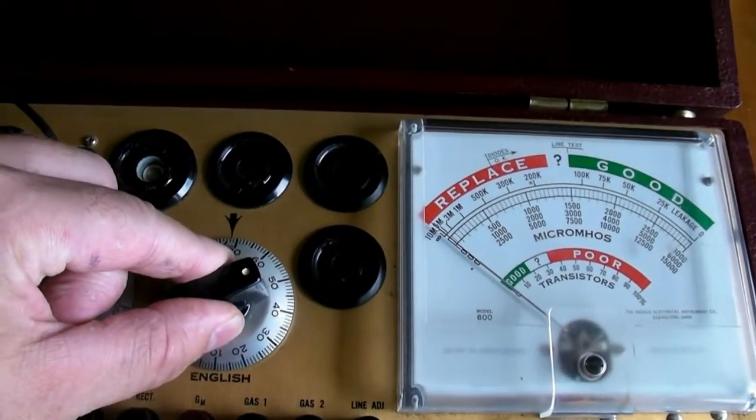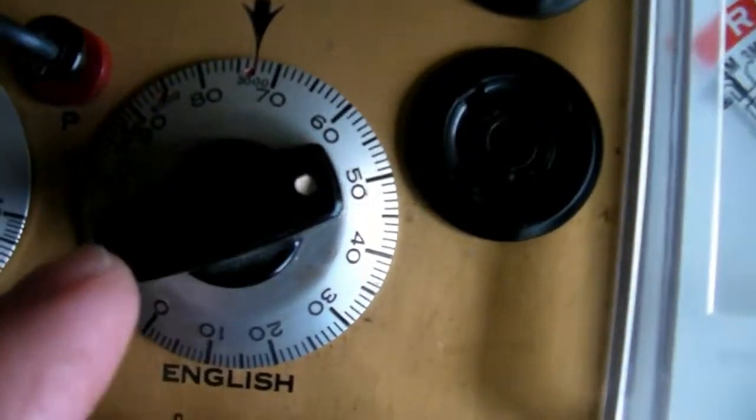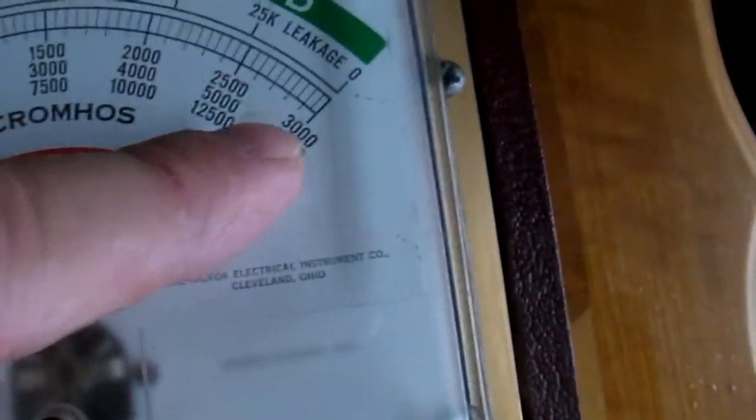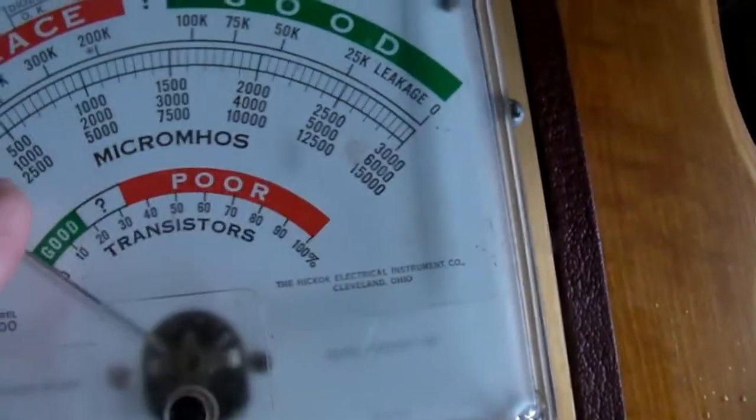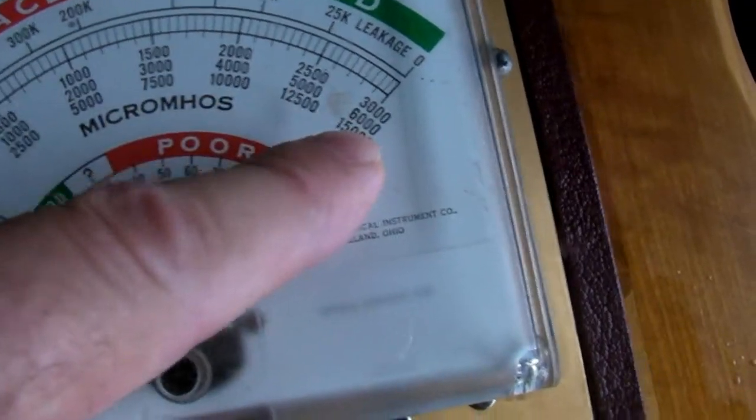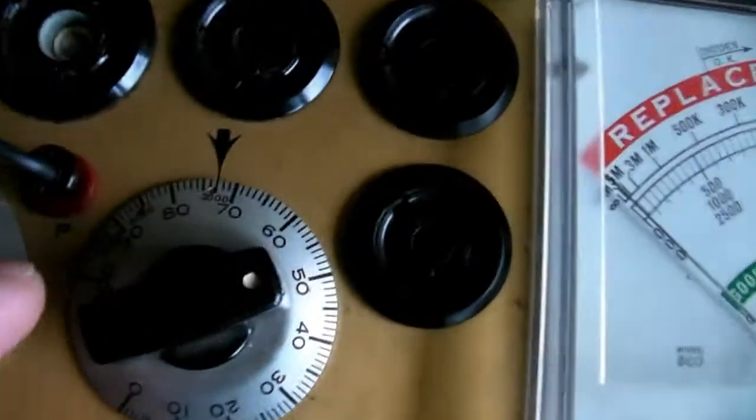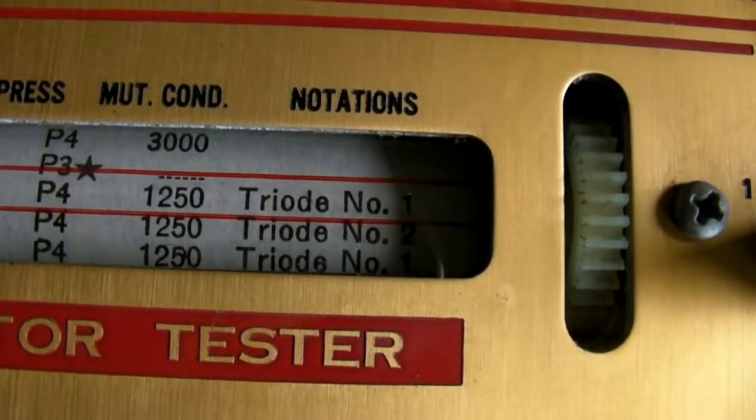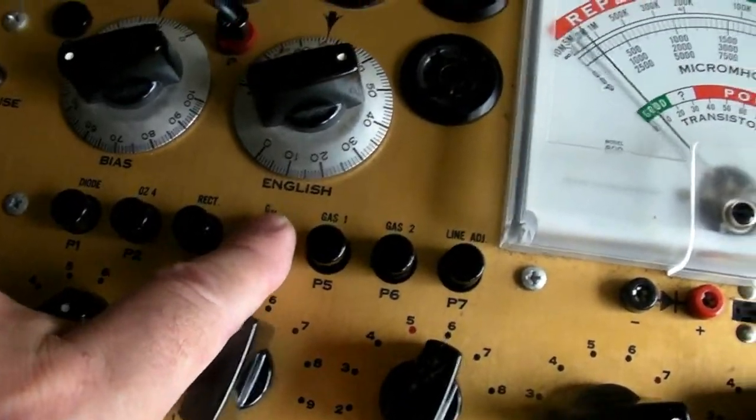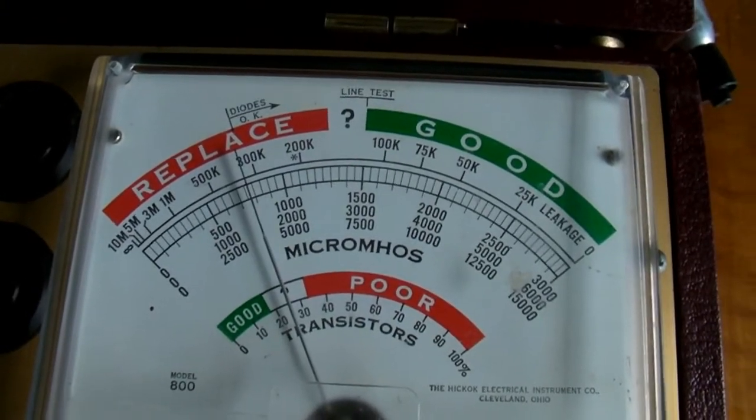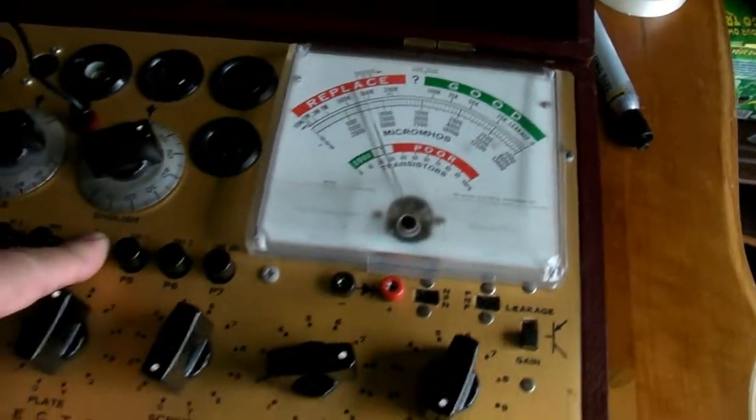So for the mutual conductance test, there's three different red dots on the English dial. And that corresponds to each one of these scales. You've got your 0 to 3000, 1000 to 6000, 2500 to 15,000. So there's three dots, and depending on which scale, because we're going to go for 1250, I'm going to put it on the 3000 scale. And what you do is you press your GM. And it is reading right about 800, which isn't too surprising since it's such an old tube.